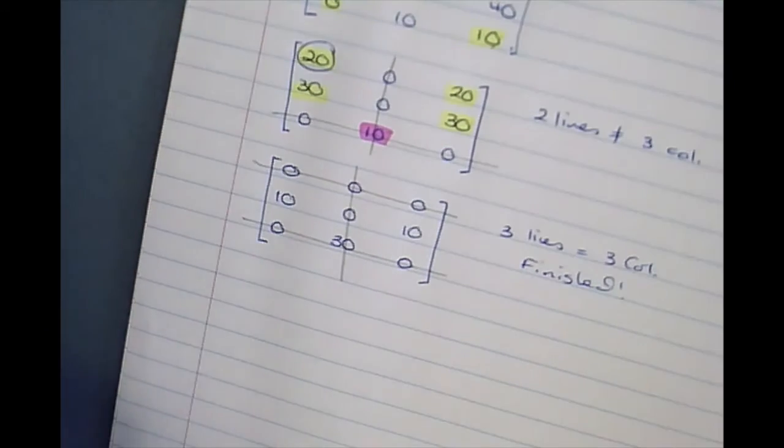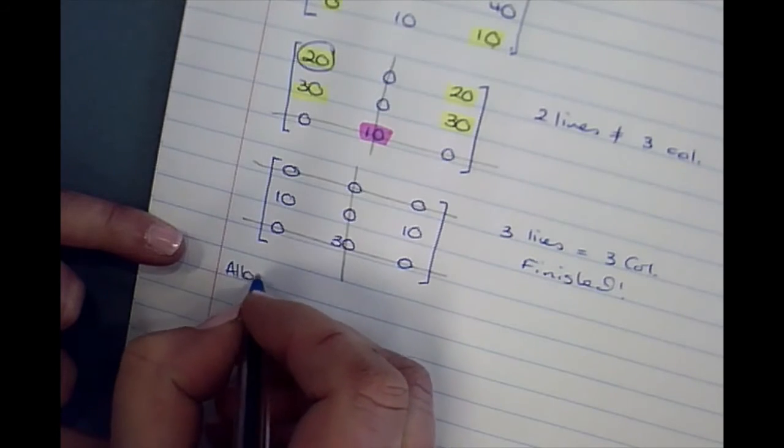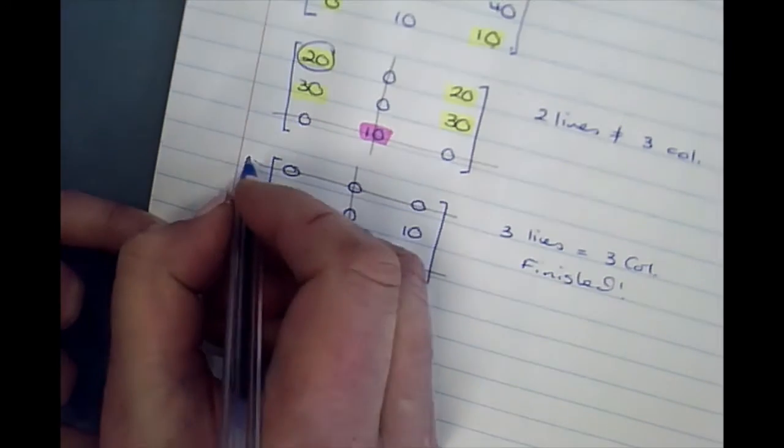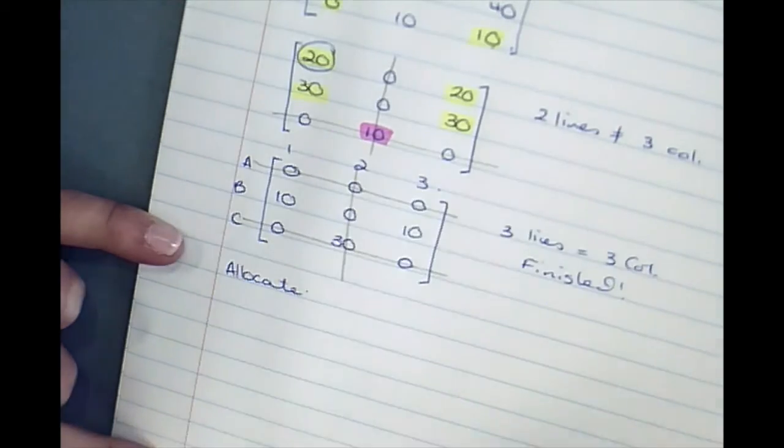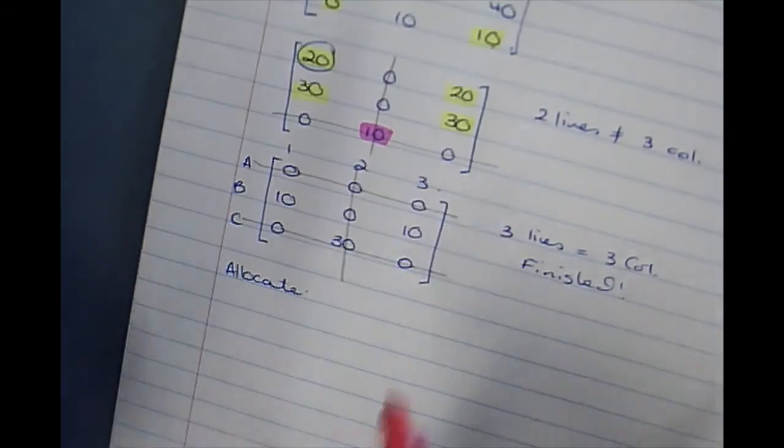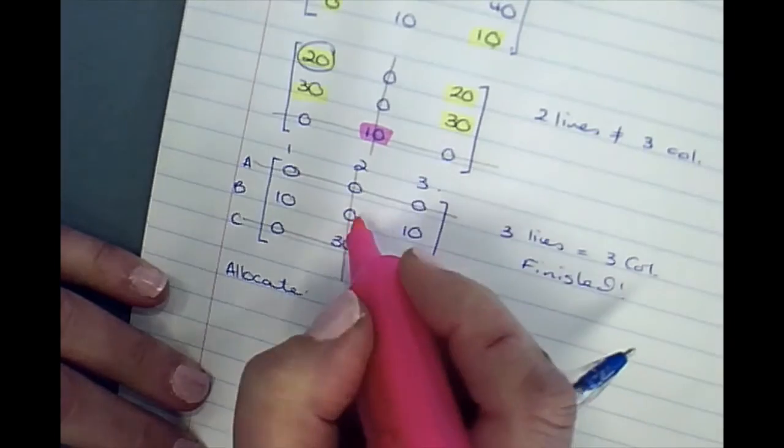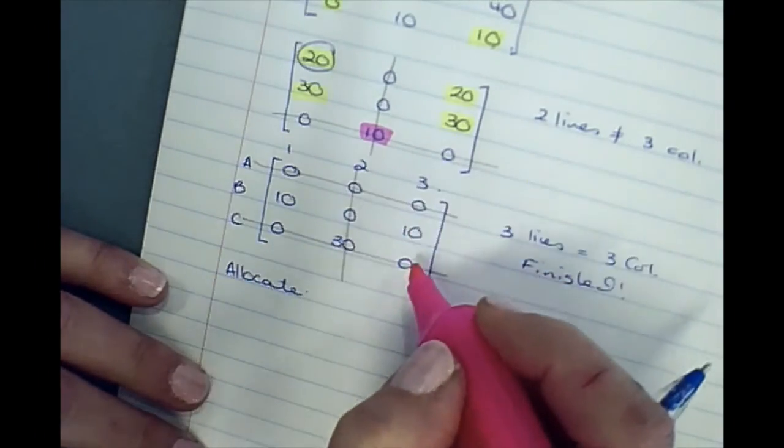So now we're going to allocate the jobs. I'm just going to put my A, B and C. Now, obviously, we go for this row. The columns all have multiples.